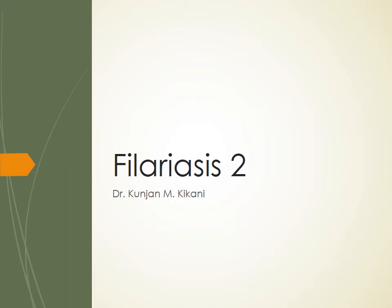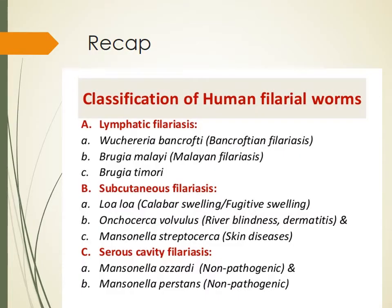Welcome to the second part of filariasis. In the first part, we discussed lymphatic filariasis, which is caused mainly in India by W. bancrofti, and in some parts of the Far East by Brugia malayi. In India, Brugia malayi is common in Kerala and some other states, but the most common filarial worm in India is W. bancrofti. We also discussed the pathogenesis, clinical features, and life cycle of this worm.